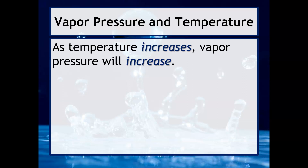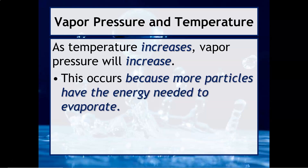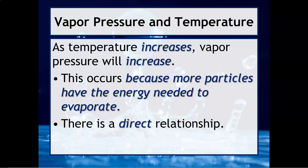If you were to increase the temperature of the substance, you would see the vapor pressure of that substance increase. This occurs because more particles have the kinetic energy needed to evaporate. We would see that there is a direct relationship, which basically means that as one thing goes up the other thing goes up, or as one thing goes down the other thing goes down.